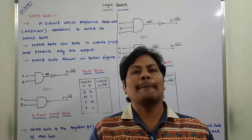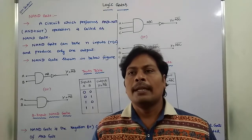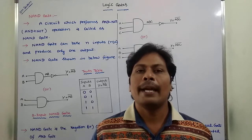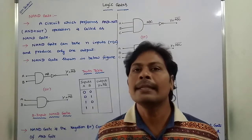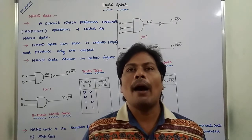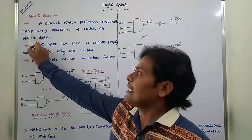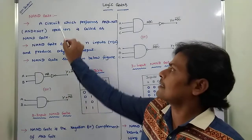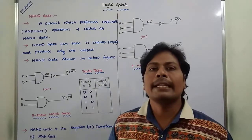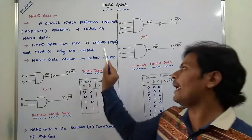Today I am giving a lecture on one type of logic gate called the NAND gate. A NAND gate is simply AND plus NOT gate — that means it is a combination of AND gate and NOT gate. A circuit which performs the AND plus NOT operation is called a NAND gate. A NAND gate can take N number of inputs where N is greater than or equal to 2, and it produces only one output.